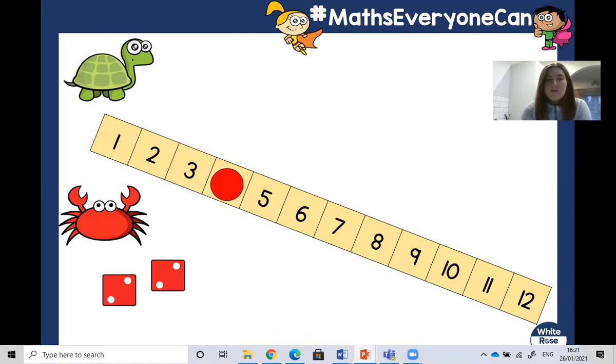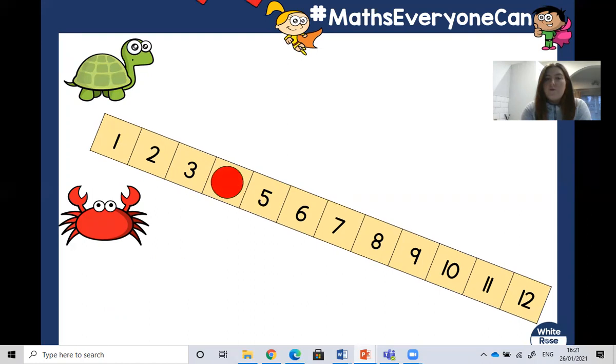Now our tortoise is going to have a go and roll the dice. And he's rolled the number two on one and one on the other. So remember, we can put on our tens frame two counters and another one and work out how many altogether. One, two, three. So therefore, our tortoise gets to move three places.